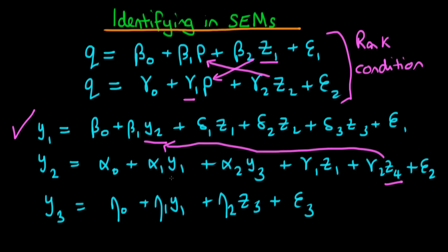In the second equation we have endogenous variables y1 and y3, as well as exogenous variables z1 and z4. To estimate the effects of y1 and y3, we need exogenous variables not included in this equation to act as IVs for both. We can do that: z2 and z3 can act as IVs for both variables, since z2 and z3 are not included in the second equation. So the second equation is also identified.